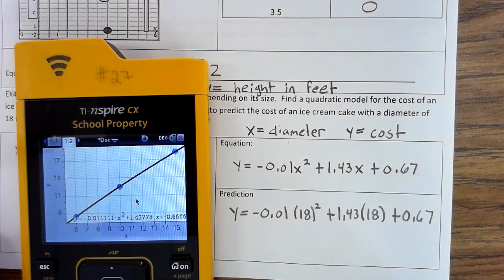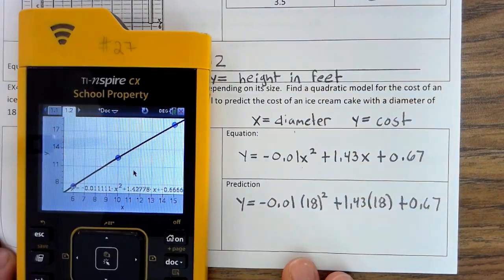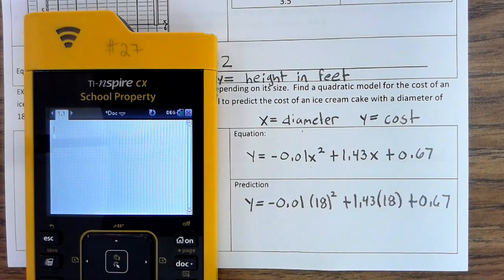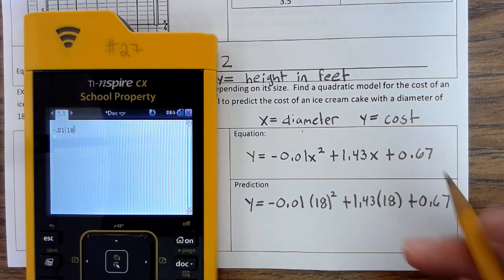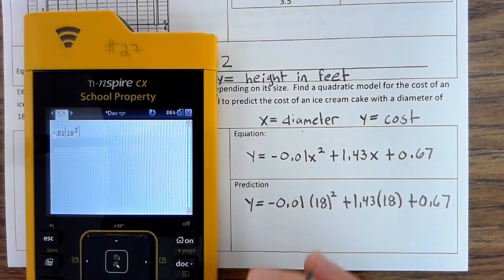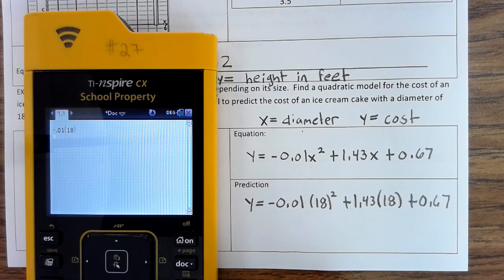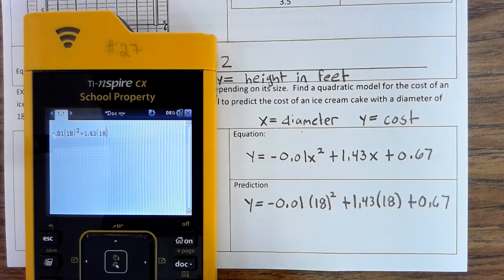So, we plug that into our calculator. We're going to go to on, new documents, no, add calculator. We'll put negative 0.01, 18 squared, squared plus 1.43, parentheses 18 plus 0.67.